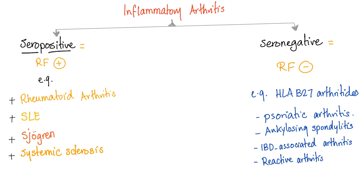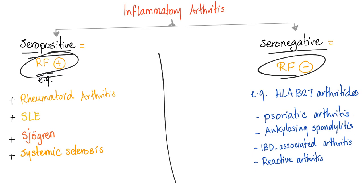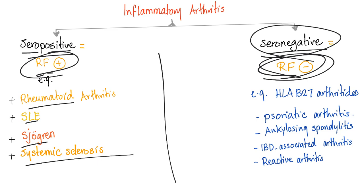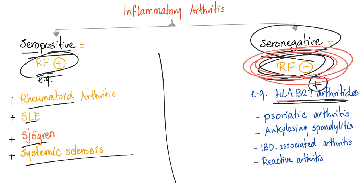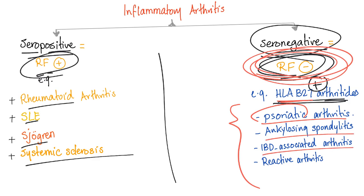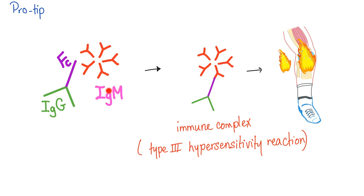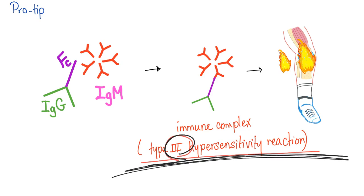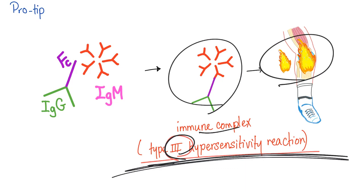Seropositive arthritis examples include rheumatoid arthritis, lupus, Sjögren's, and systemic sclerosis. Seronegative arthritis — also called seronegative spondyloarthropathies — are HLA-B27 positive but negative for rheumatoid factor. Examples include psoriatic arthritis, ankylosing spondylitis, inflammatory bowel disease-associated arthritis, and reactive arthritis. For the advanced student: rheumatoid factor (IgM against Fc of IgG) forms an immune complex that drives Type 3 hypersensitivity reaction, which causes the inflammation.